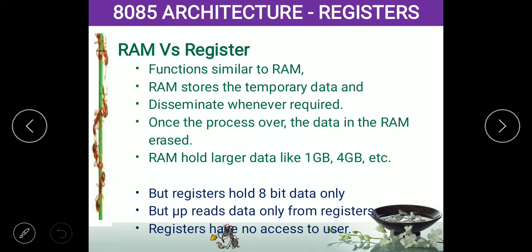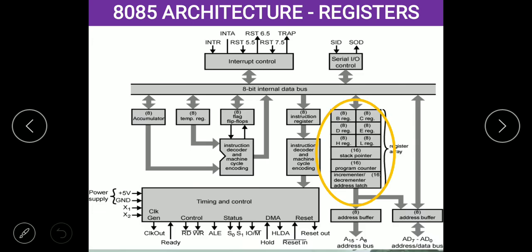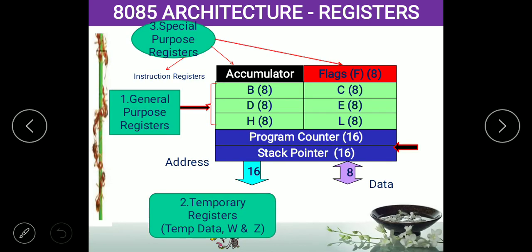The processor accepts data only from the register and gives data only to the register — that is the difference. We previously discussed B register, C register, D, E, H, and L registers — how numbers are stored, how they are retrieved, and what happens if the number is more than 8 bits. If a 16-bit number is sent, the registers combine into pairs — B, C, D, E, H, L — and store and process the data.